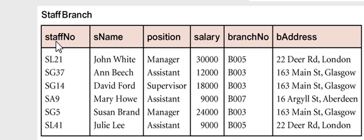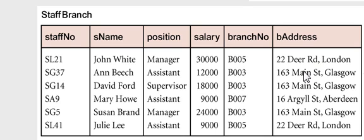Staff number functionally determines branch number — we all agree. Now, branch number functionally determines branch address. Every time it's B005, it's 22 Dear Road. Every time it's B003, it's 163. So that's transitive: staff number functionally determines branch number, and branch number functionally determines branch address.